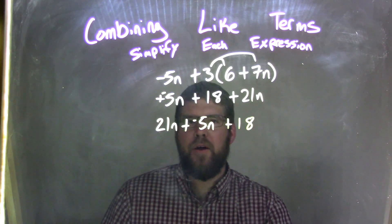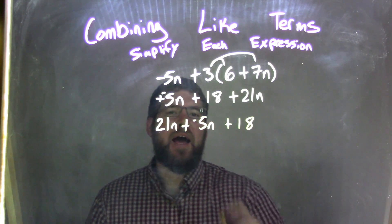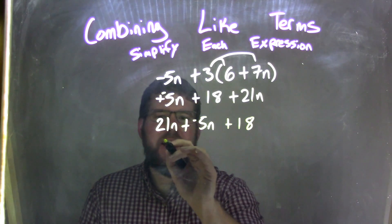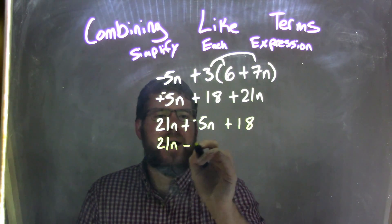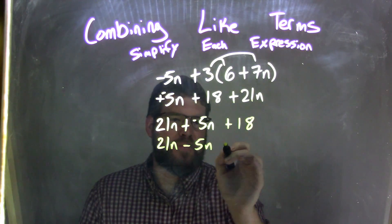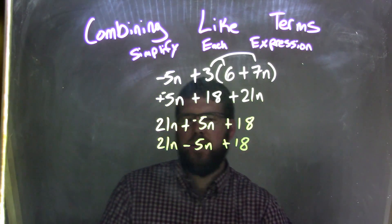So again, I use the commutative property to rearrange, and hopefully you can see that. But again, if you need to, the 21n minus 5n, adding a negative is subtraction, plus 18. There we go.